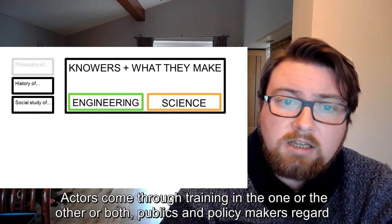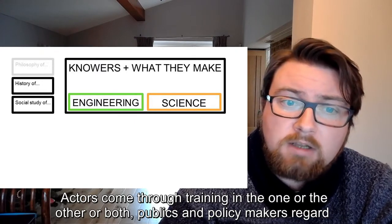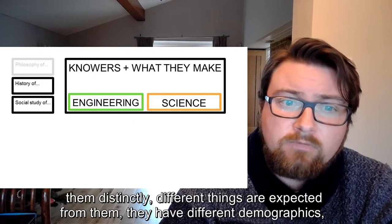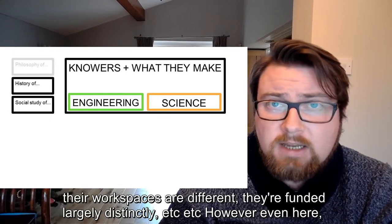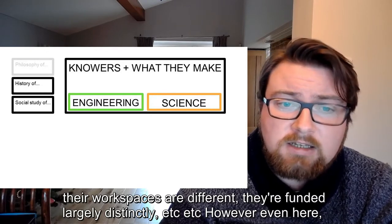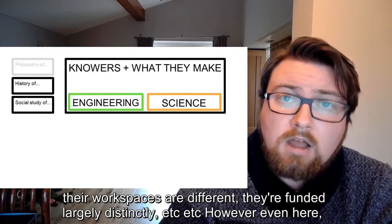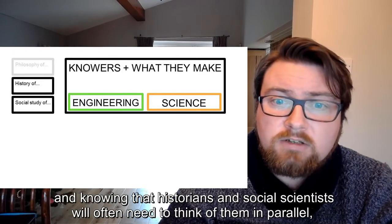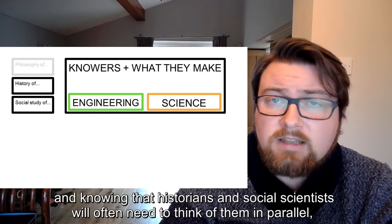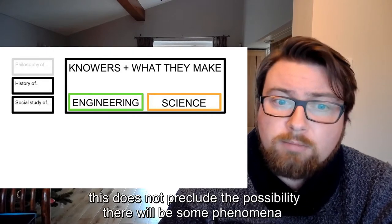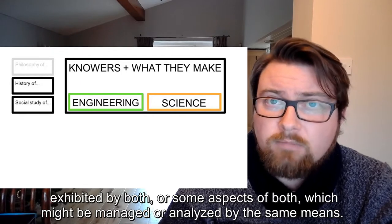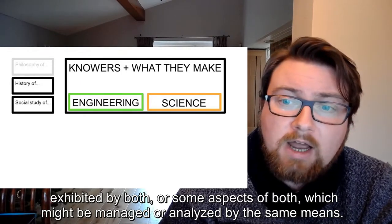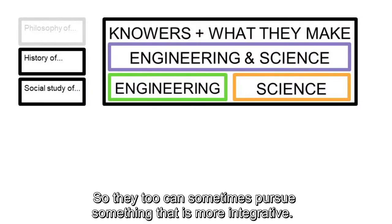Actors come through training in the one or the other, or both. Publics and policy makers regard them distinctly. Different things are expected from them. They have different demographics. Their workspaces are different. They're funded largely distinctly, and so on. However, even here, knowing that historians and social scientists will often need to think of them in parallel, this does not preclude the possibility that there will be some phenomena exhibited by both which might be managed or analysed by the same means. So they too can sometimes pursue something that is more integrative.